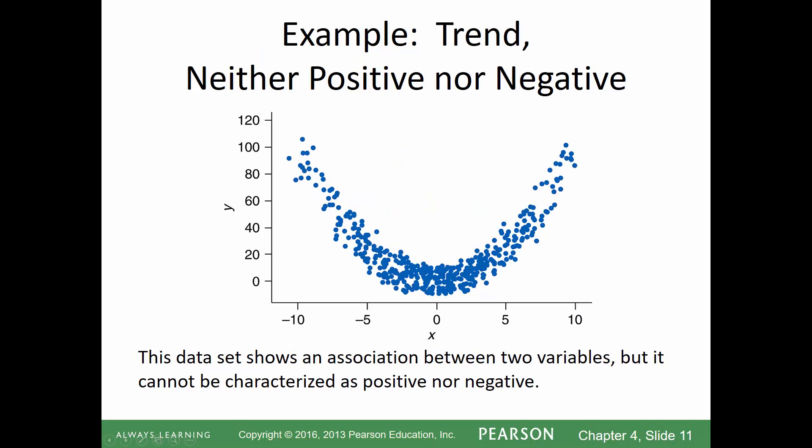It's possible to have a trend that is not linear, meaning it's not simply positive or negative — positive and negative only apply to linear trends. In this graph there is certainly a trend but it has a curve to it. The data set shows an association between two variables but it cannot be characterized as positive or negative, so we would simply say there's a nonlinear trend.